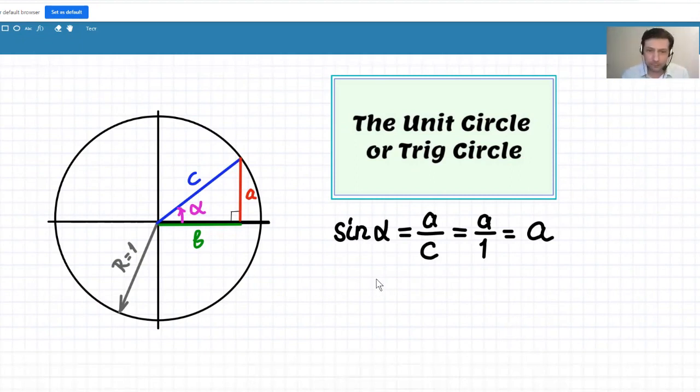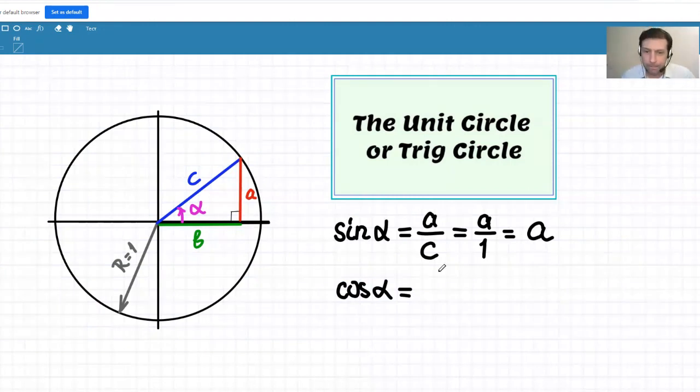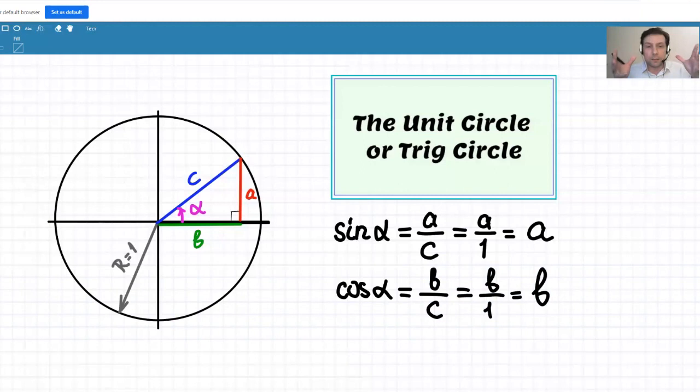Let's examine cosines. So cosine alpha, by definition, is the ratio of the adjacent leg, which is B here, adjacent to the angle. And hypotenuse. B to hypotenuse. But hypotenuse is 1, means B over 1, but that's just B. Now we can see the cosines as well in this triangle and in this circle.